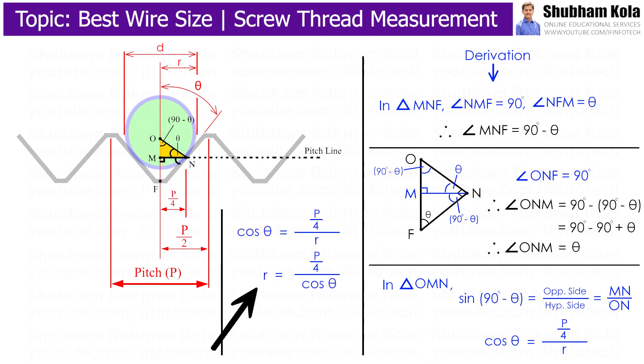The radius of wire is half of wire diameter, and 1 by cos theta is sec theta. Therefore, diameter of wire small d equals P by 2 sec theta.